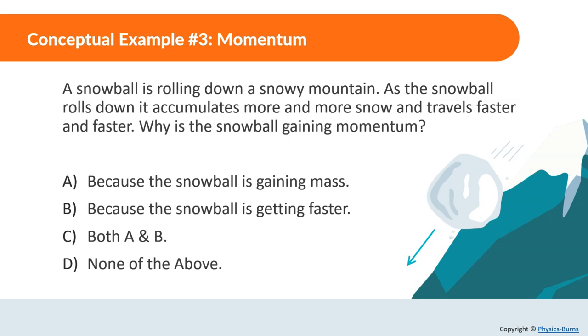A snowball is rolling down a snowy mountain. As the snowball rolls down, it accumulates more and more snow and travels faster and faster. Why is the snowball gaining momentum? The answer is C, both A and B. Remember, momentum is equal to mass times velocity. As it's rolling down, it's accumulating more mass. And as it's going down, it's getting faster and faster. So both A and B.